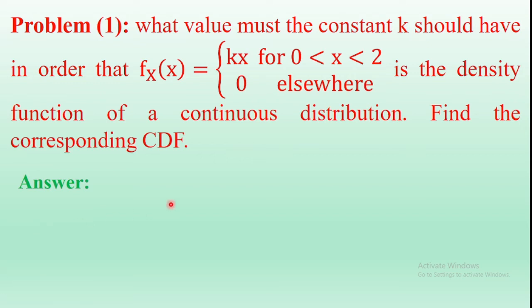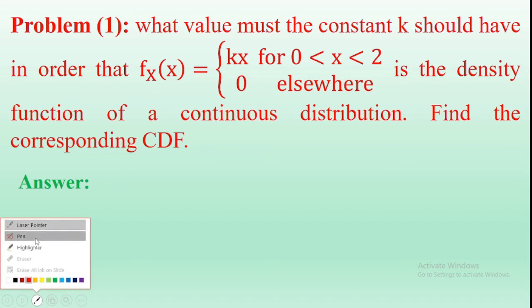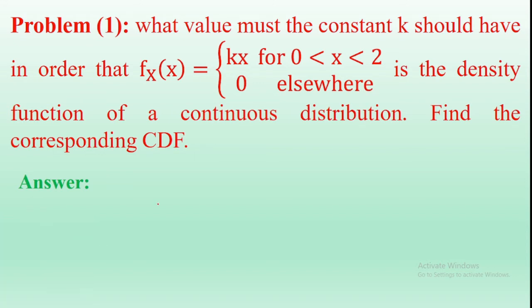Hi everyone, welcome back to precaution tutorials. In this video I am going to discuss an example of probability distribution function or cumulative distribution function. What value must the constant K have in order that f(x) = kx for x from 0 to 2, and f(x) = 0 elsewhere, is the density function of a continuous distribution? Find the corresponding cumulative distribution function.